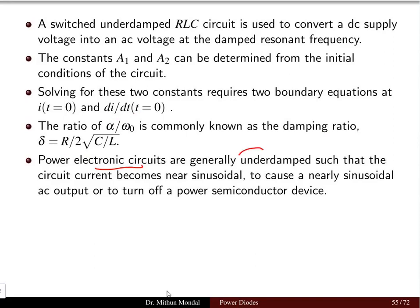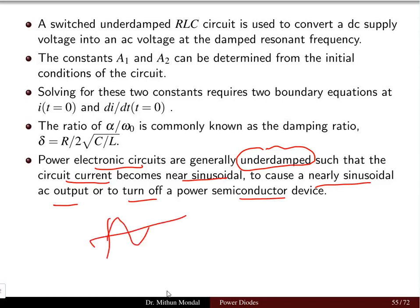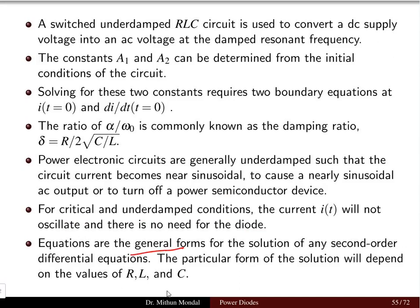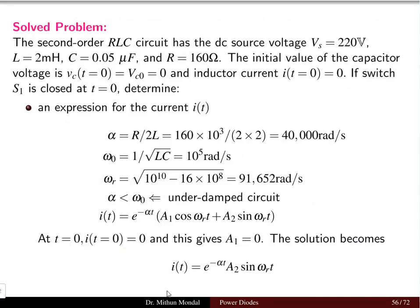Power electronic circuits are generally underdamped in nature so that the circuit current becomes nearly sinusoidal, producing a nearly sinusoidal AC output and allowing turn-off of power semiconductor devices. For critically damped and overdamped conditions, the current I(t) will not oscillate and there is no need for a diode. The particular form of the solution depends on the values used for resistance, inductance, and capacitance.